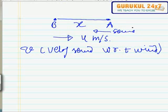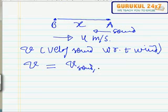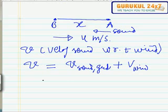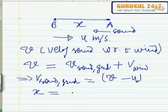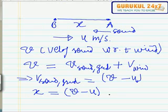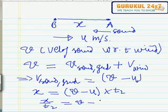In this case, the wind is going against the sound because sound moves from A to B. So v equals velocity of sound with respect to ground plus velocity of wind u. This implies the velocity of sound with respect to ground becomes v minus u. The distance x equals v minus u times t2, so x over t2 equals v minus u. That's our second equation.